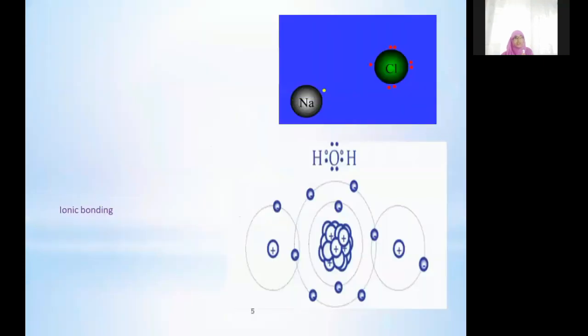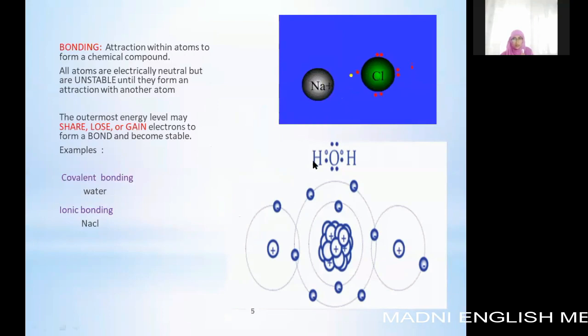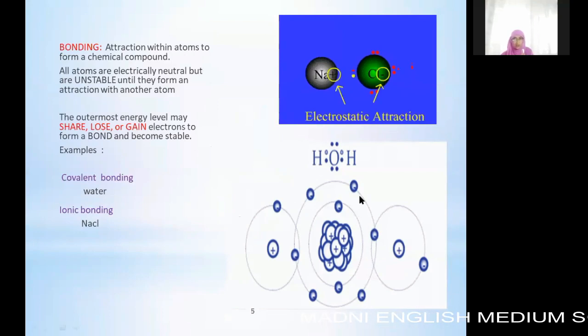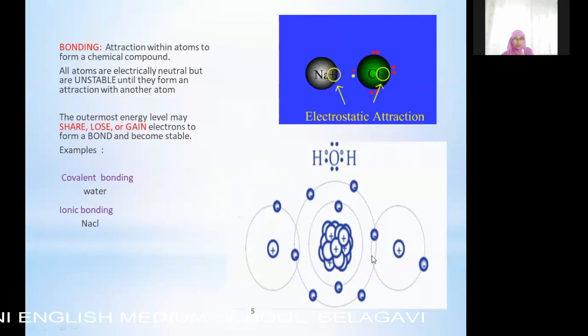Now let us know what type of bonding they will show. We said they can attain the stability either by gaining, losing or sharing. This first example will show you that the number of electrons in the valence shell in oxygen we got to know it is six. The requirement is they have to have eight electrons so oxygen is short of two electrons.